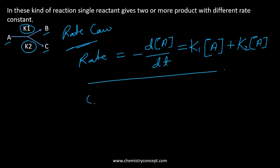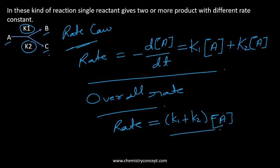The overall rate will be given as k1, which is the rate constant for reactant going from A to B, plus k2, which is the A to C direction.